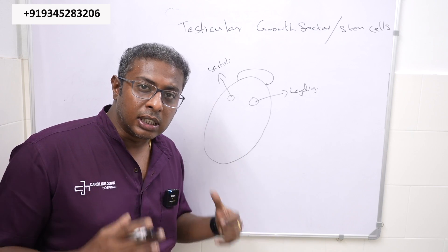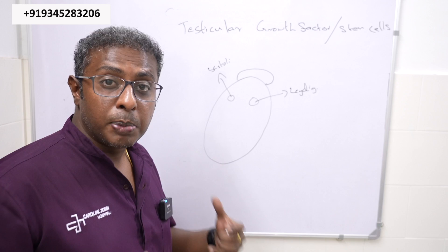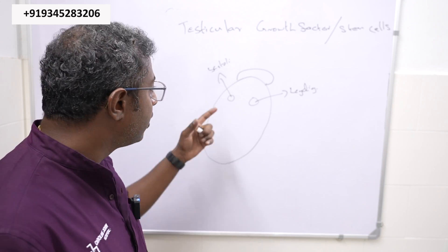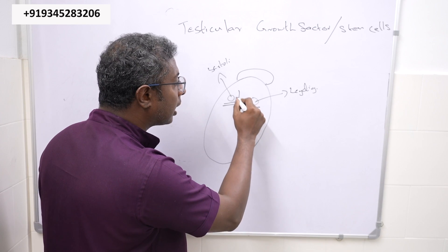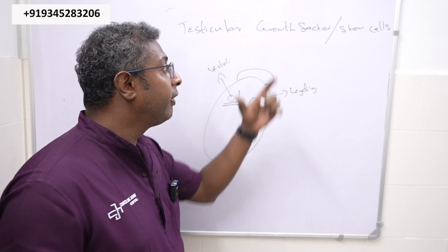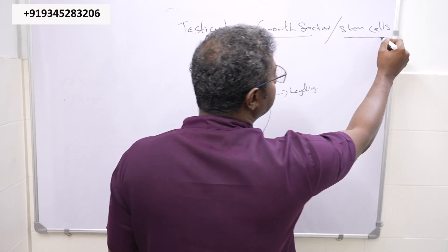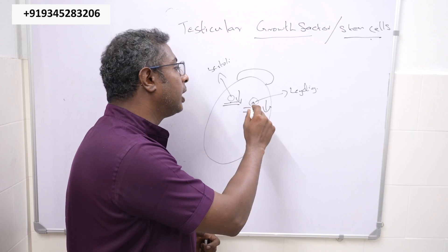Whenever there is azoospermia, especially non-obstructive azoospermia, we should understand that the function of both these cells had come much lower. Our aim of giving this growth factor or stem cell injections is to improve the function of the sertoli and ledic cells.